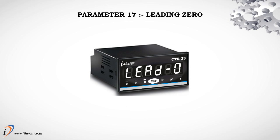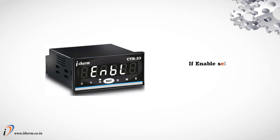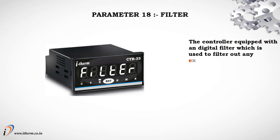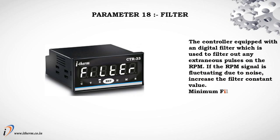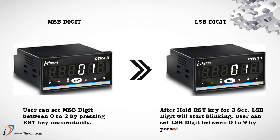Parameter 17: Leading Zero. If disabled, leading zeros will not display in run mode. Parameter 18: Filter. The controller is equipped with a digital filter used to filter out extraneous pulses on the RPM signal. If the RPM signal is fluctuating due to noise, increase the filter constant value. The minimum filter value is 1 and the maximum is 20. The user can set the MSP digit between 0 to 2 by pressing the reset key momentarily. After holding the reset key for 3 seconds, the LSP digit will start blinking and can be set between 0 to 9.